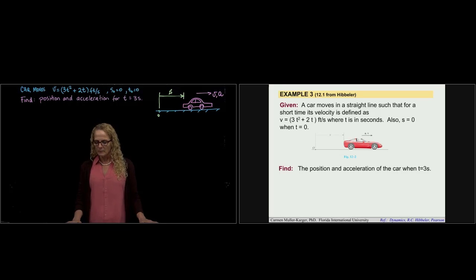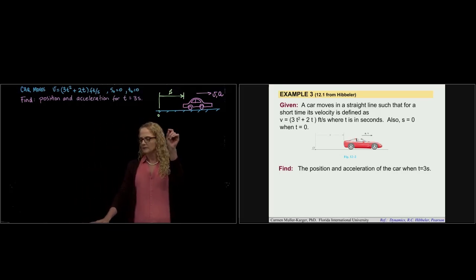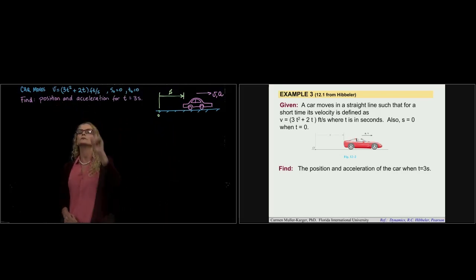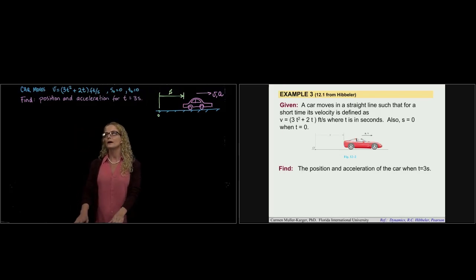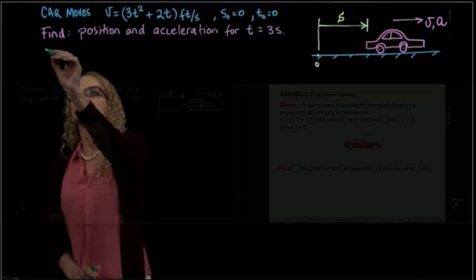So we have a car that moves in a straight line such that for a short period of time, the velocity is defined with the equation 3 times time squared plus 2 times time. And we are asked to find the position and the acceleration. This is our solution.